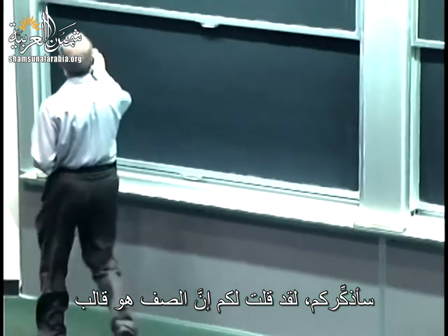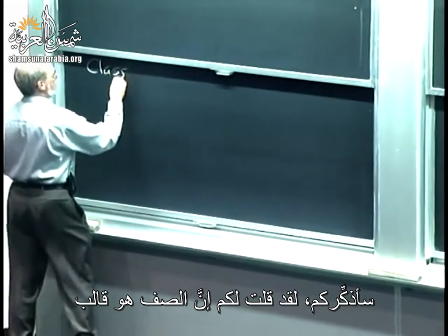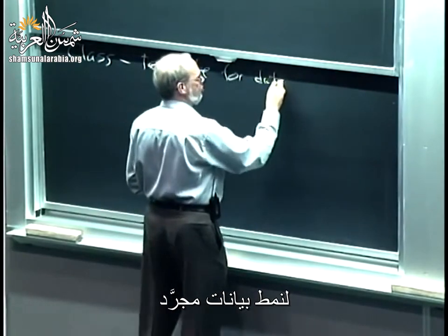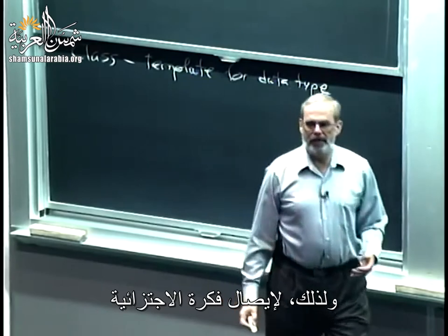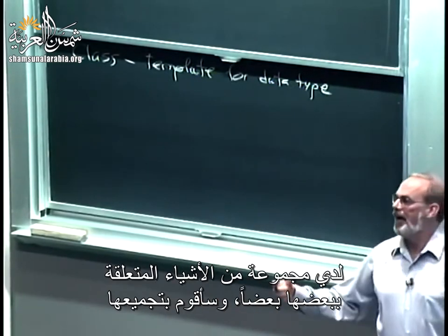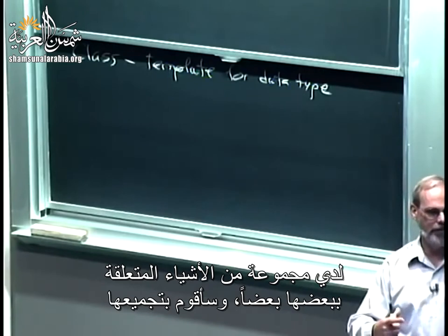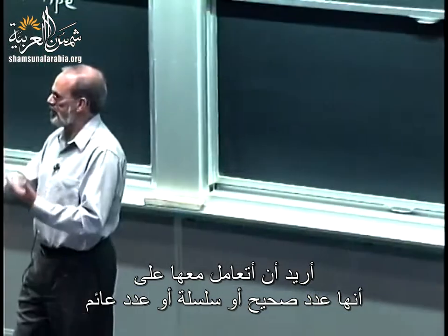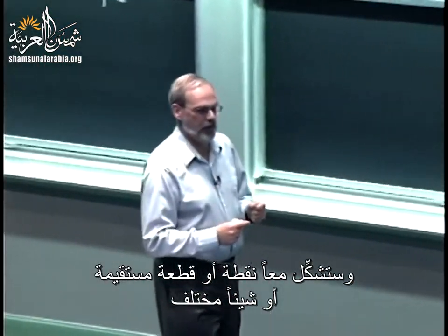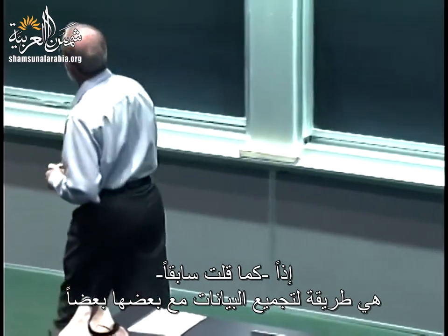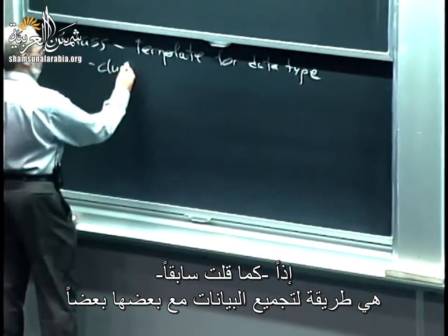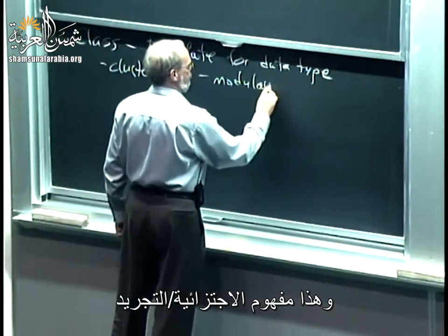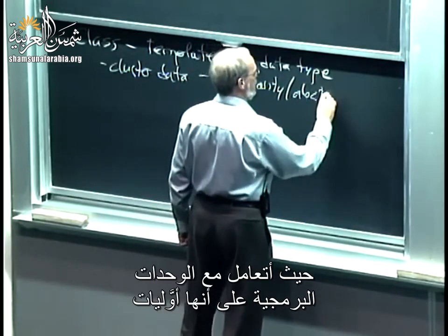Let me remind you what the point of classes was. A class is basically a template for an abstract data type. This was really to drive home the idea of modularity — the ability to say I've got a set of things that naturally belong together, cluster them together, and treat it like a primitive: a float, an int, a string. It's a way of clustering data together — a notion of modularity and abstraction, treating them as primitives.